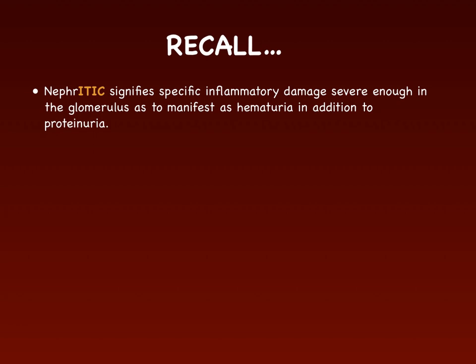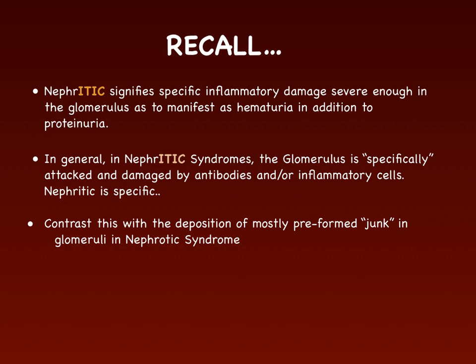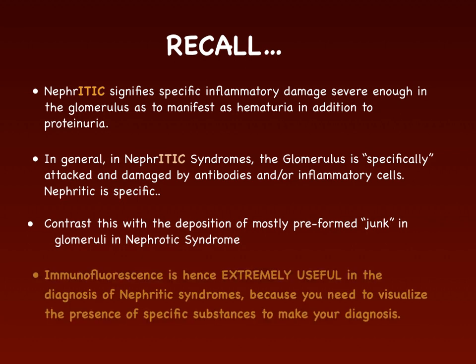In nephritic syndrome, we're talking about a specific inflammatory damage that's severe enough in the glomeruli to manifest as hematuria, and oftentimes you have hematuria in addition to proteinuria. In nephritic syndromes, the glomeruli is specifically attacked and damaged by antibodies and/or inflammatory cells, contrasting with the deposition of mostly preformed junk in glomeruli in nephrotic syndrome. Immunofluorescence is extremely useful in diagnosing nephritic syndromes because you need to visualize the specific provoking or attacking substances to make your diagnosis.